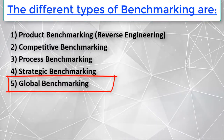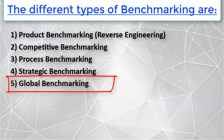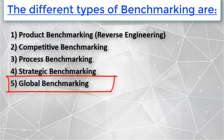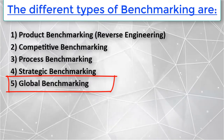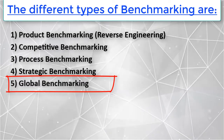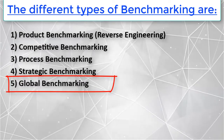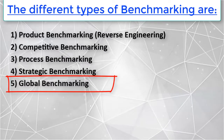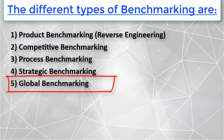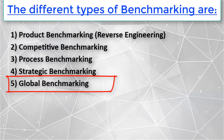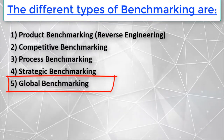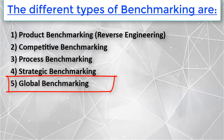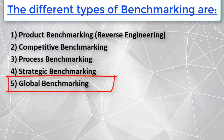The fifth type is global benchmarking. This is an extension of strategic benchmarking to include benchmarking partners on a global scale. For example, Ford Company in the USA could benchmark its dealership maintenance function with that of the Mazda Company in Japan.